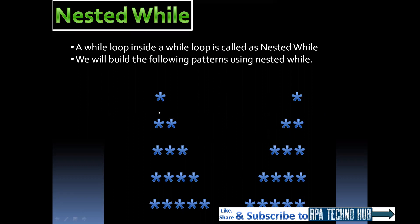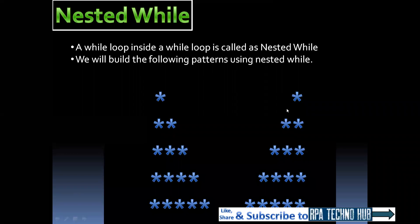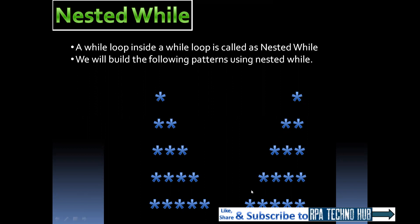In the first pattern, we have five different rows and five different columns where stars are printed. In the second example, we have spaces included before the stars. In the first row we have four spaces, in the second row three spaces, in the third row two spaces, in the fourth row one space, and in the fifth row no spaces. Let's see how we can print these patterns using UiPath.